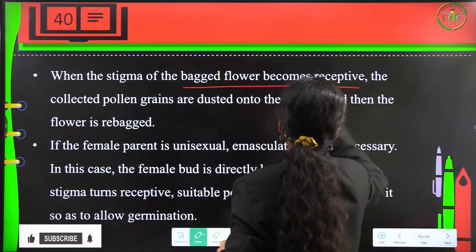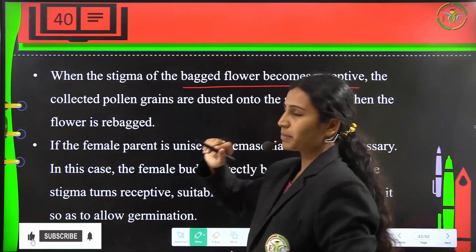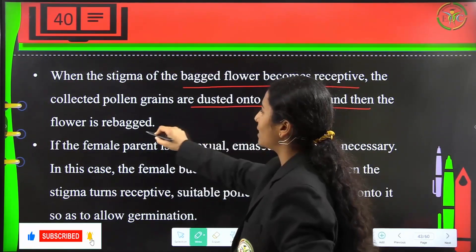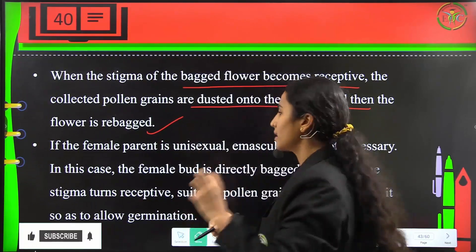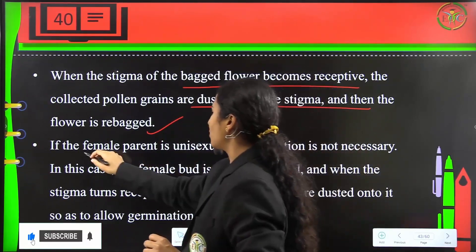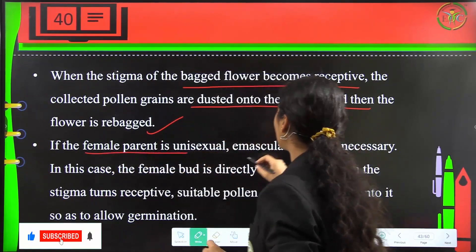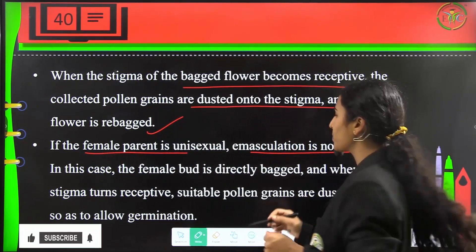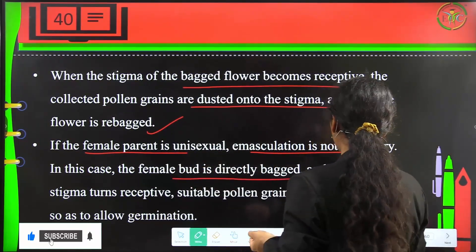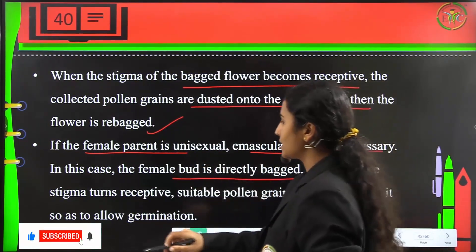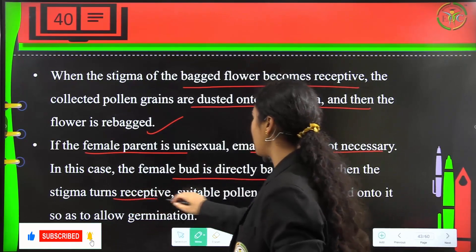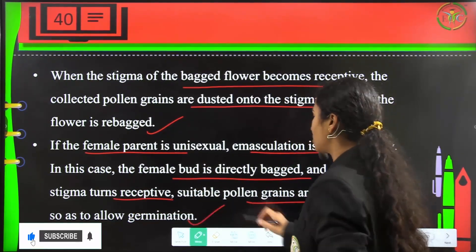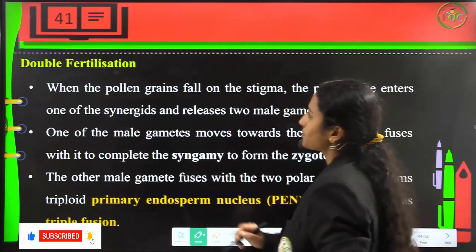When the stigma of the bagged flower becomes receptive, collected pollen grains are dusted on the stigma and the flower is re-bagged. When the female parent is unisexual, emasculation is not necessary. In that case, the female bud is directly bagged and when the stigma turns receptive, suitable pollen grains are dusted on it to allow germination.